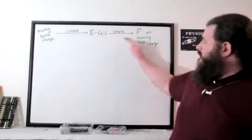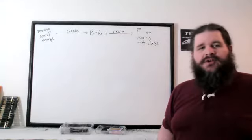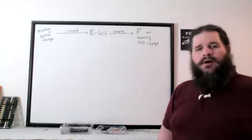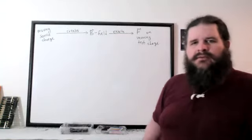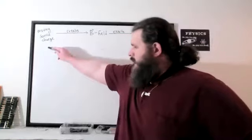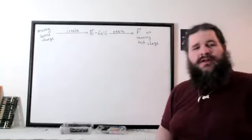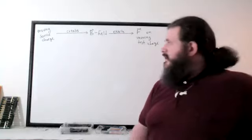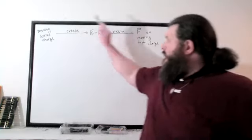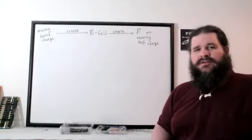That magnetic field exerts a force on other test charges as long as they're moving. The test charge could be a lump of charge that's moving, or it could be a wire with current flowing through it. Ultimately, it's much more convenient mathematically and conceptually to think of it as one charge creating a magnetic field which exerts a force on the other — just like we think of one charge creating an electric field which exerts a force on the other.